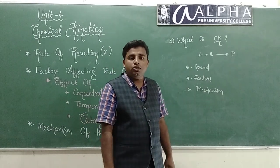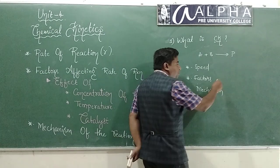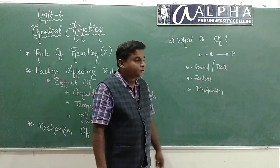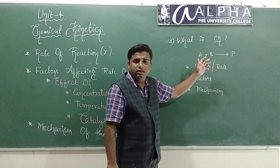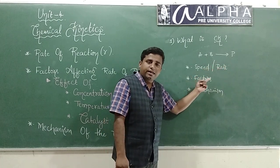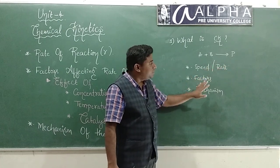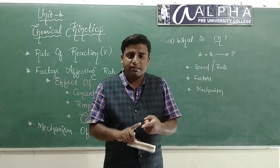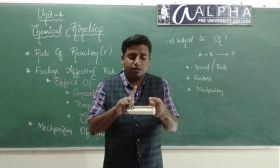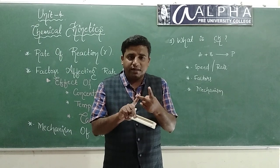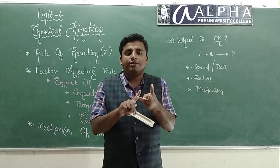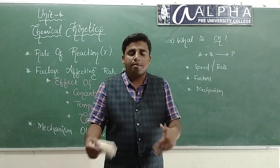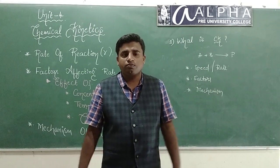In chemistry, we do not use the term 'speed.' Instead, we use the word 'rate of the reaction.' So the three aspects are: rate of the reaction, factors affecting the rate of the reaction, and the mechanism of the reaction. The study of these three things is called chemical kinetics. Chemical kinetics is a branch of chemistry which deals with the rate of reaction, factors affecting the rate of reaction, and the mechanism of the reaction. Thank you.